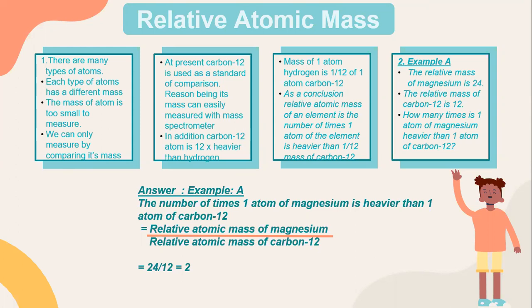Example A: the relative atomic mass of magnesium is 24, and the relative atomic mass of carbon-12 is 12. How many times heavier is one atom of magnesium than one atom of carbon? The formula to get the number of times magnesium is heavier than one atom of carbon is: relative atomic mass of magnesium divided by relative atomic mass of carbon. So 24 divided by 12 equals 2.